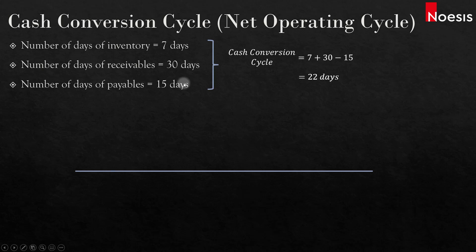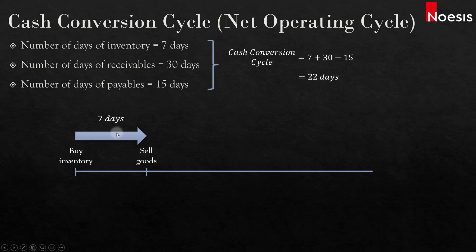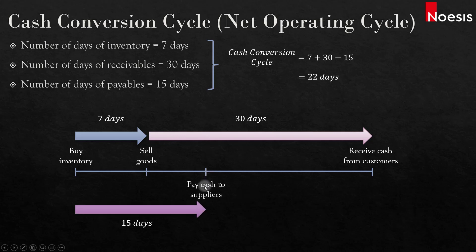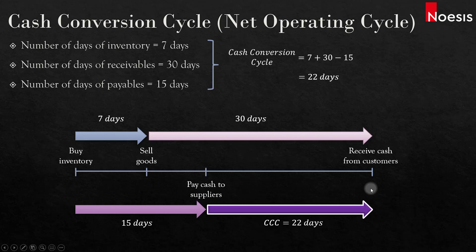Looking at the timeline graphically: from the point where we buy the inventory to the point where we sell the goods, it takes an average of 7 days. It then takes another 30 days to receive cash from customers, so the operating cycle is 37 days in total. But we will have to pay the supplier 15 days after buying the inventory. So the gap between paying cash to suppliers and receiving cash from customers is 22 days — that is our cash conversion cycle, representing how long the company's funds are tied up in working capital.